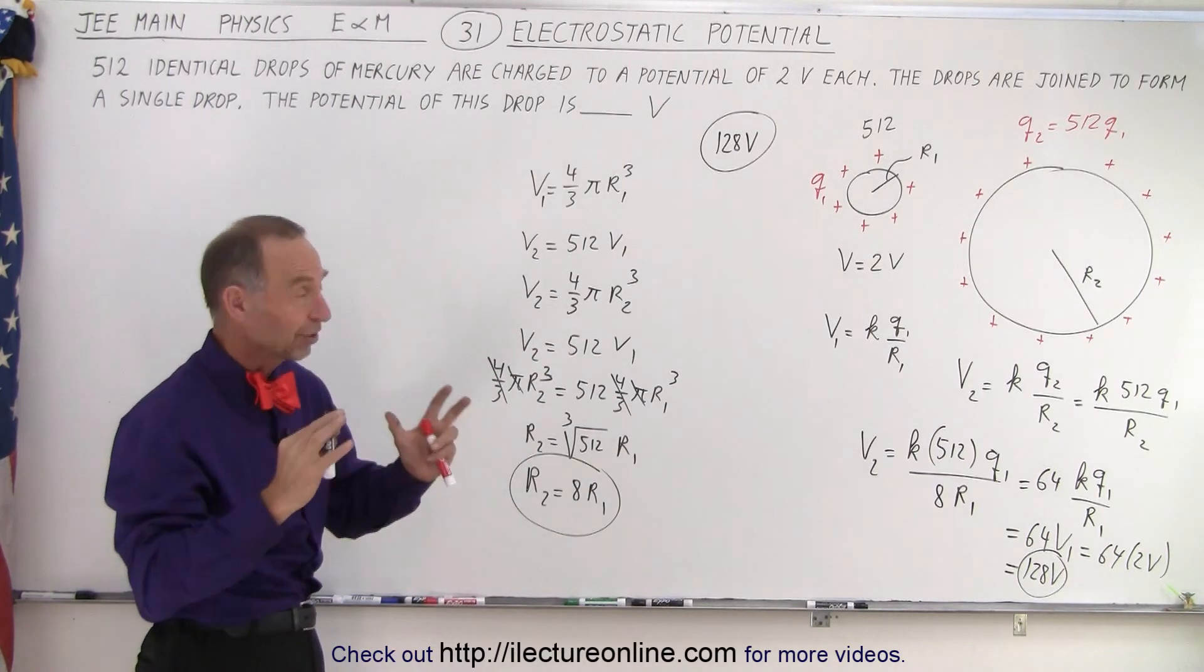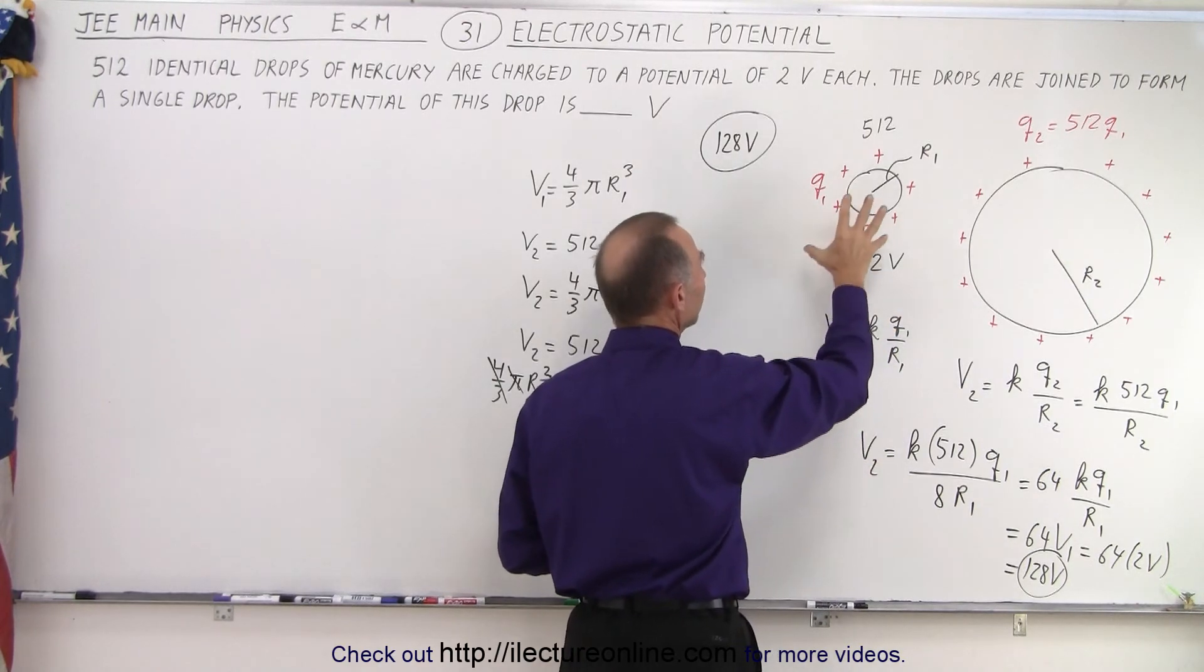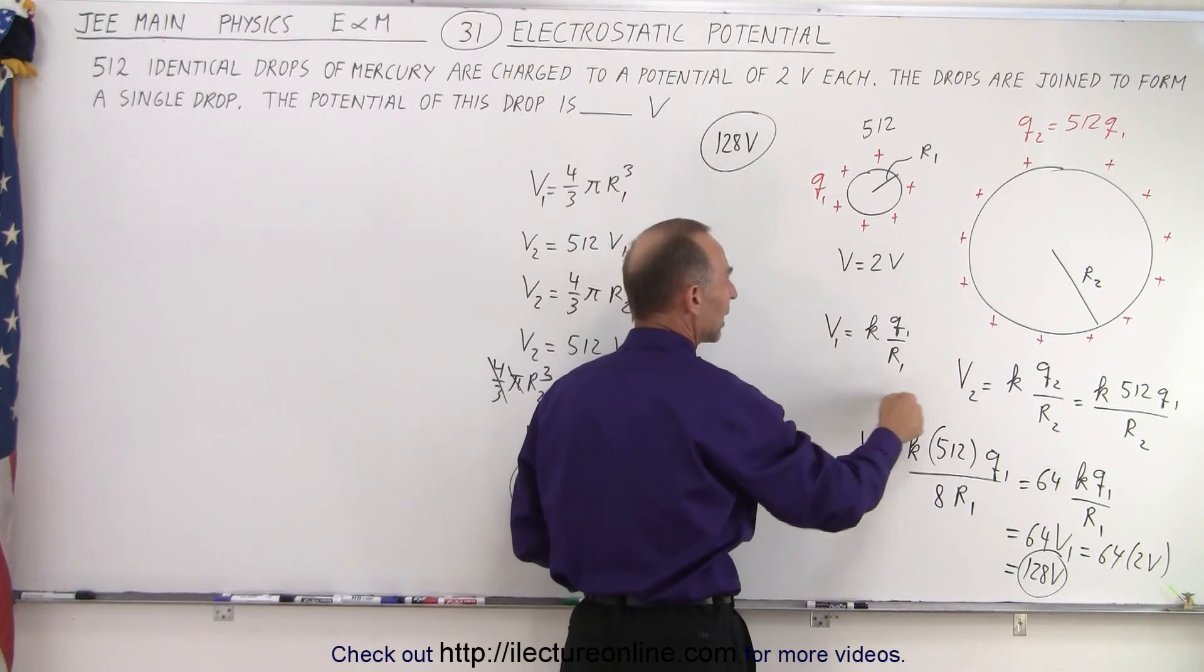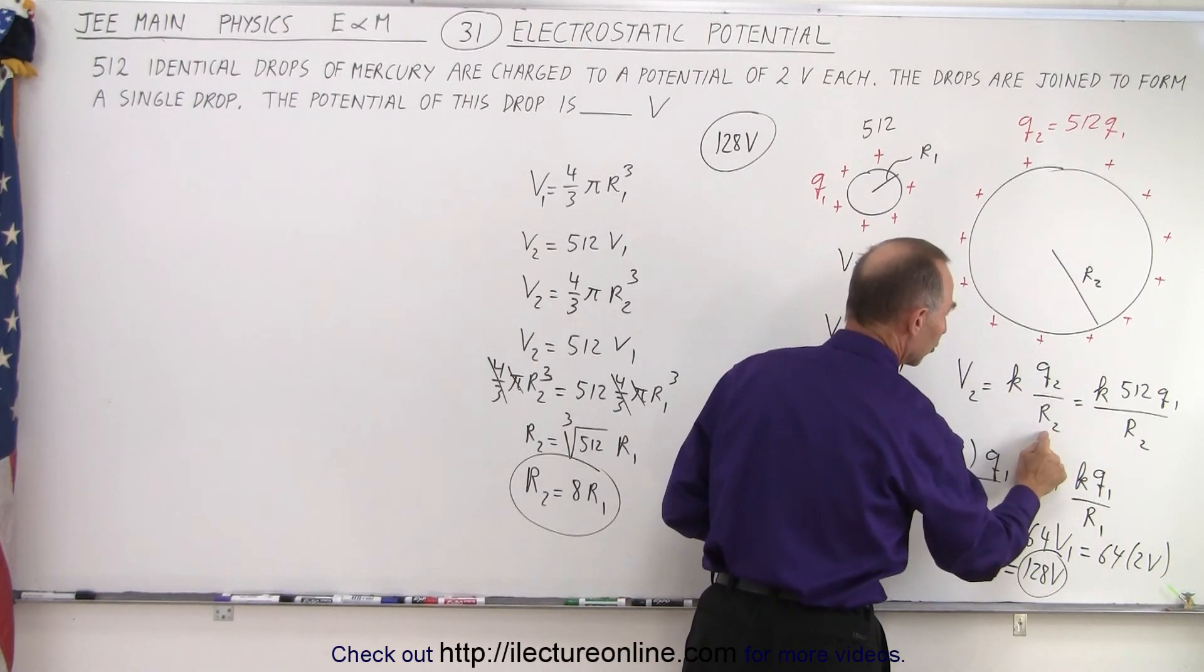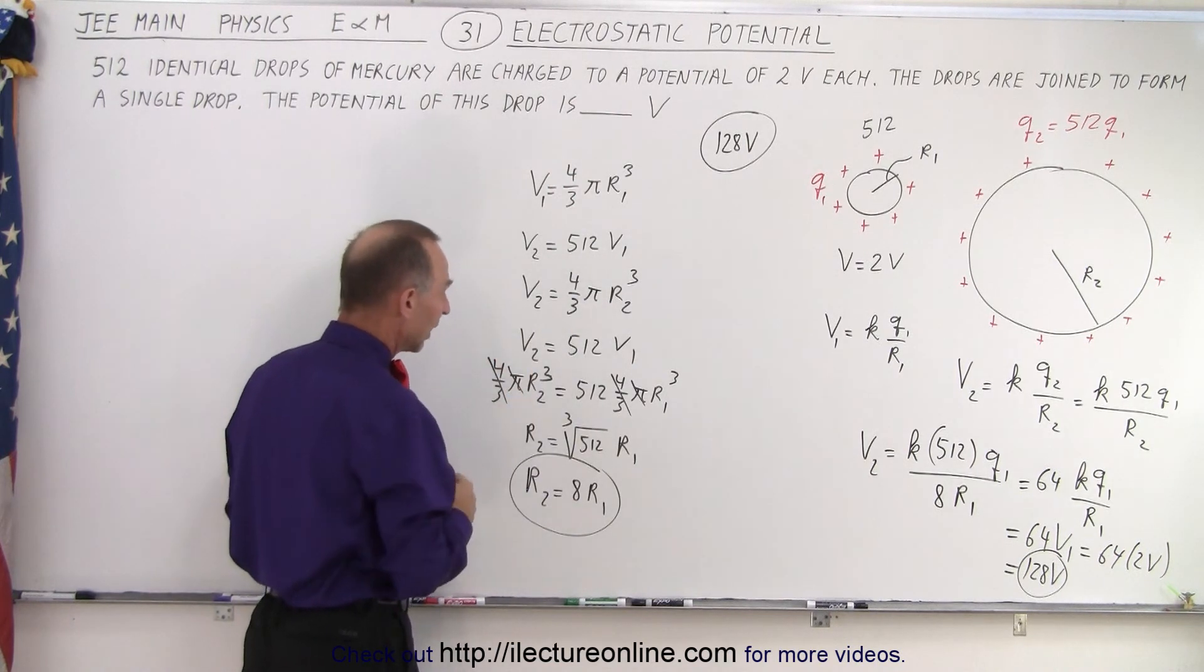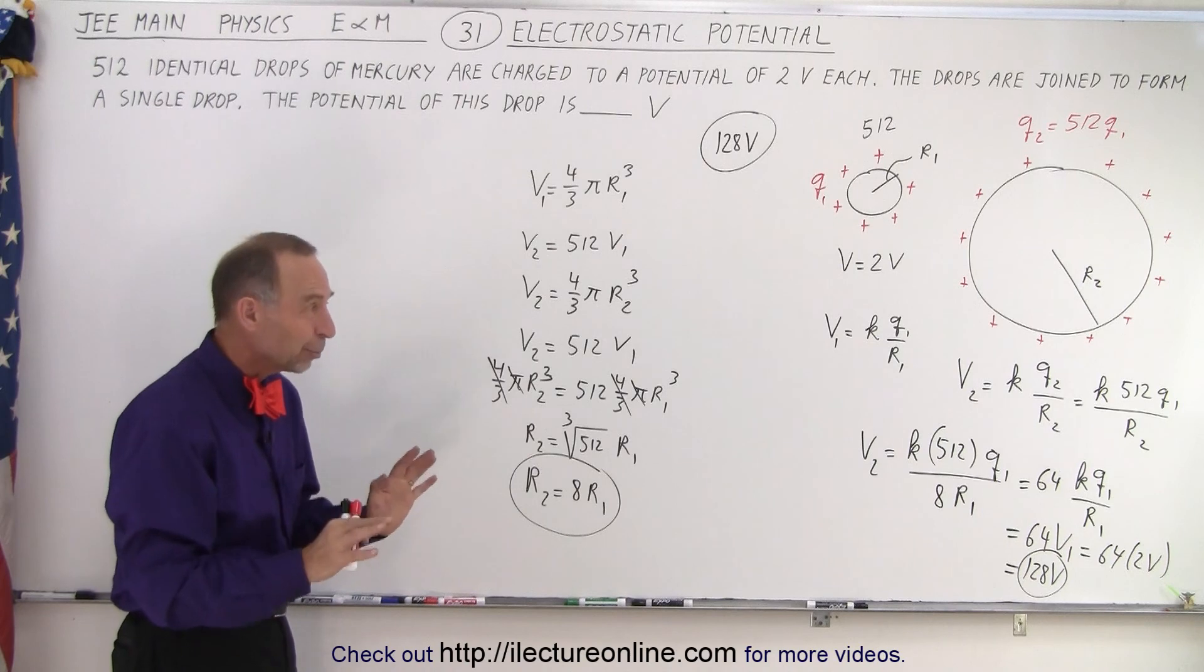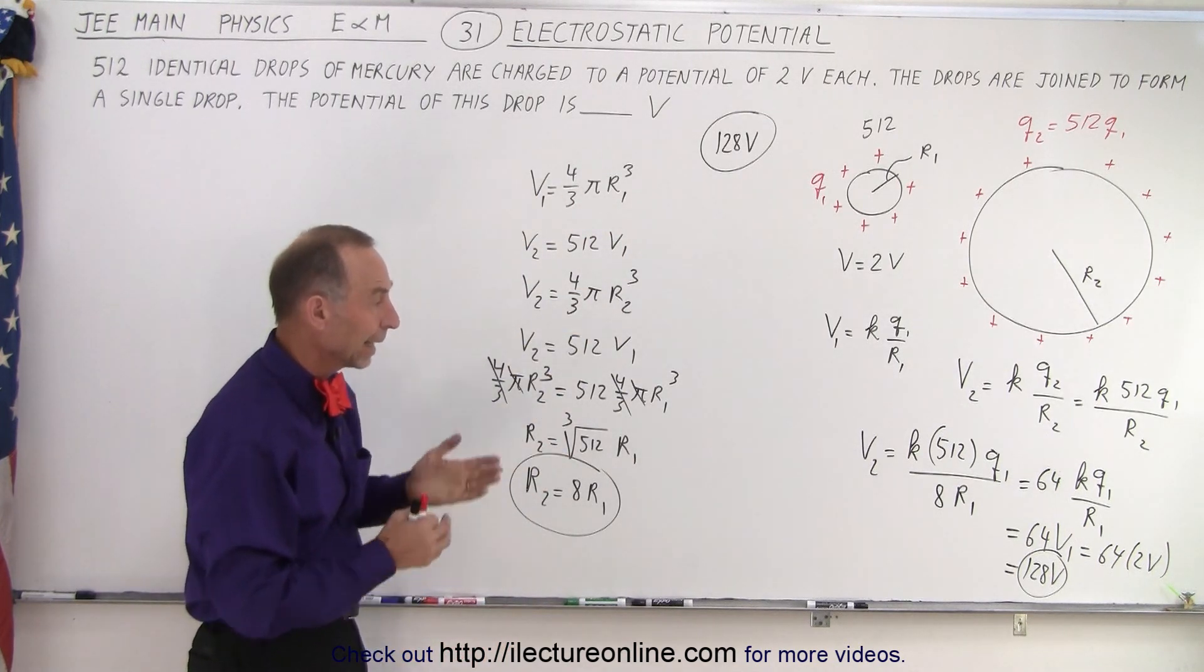Again, you have to be able to visualize what's happening. We have a small mercury sphere of radius R1, charge Q1, that has been charged to 2 volts. Then we take 512 of those and combine them into a single mercury ball, so we have 512 times the charge. We don't know what the new radius is, and we're trying to find the new voltage. We know that the voltage can be defined by KQ over R. And so that's KQ2 over R2, and Q2 is 512 times Q1. We just have to find the relationship between R2 and R1. We do that by realizing that the volume is 4 thirds pi R cubed, and then we set the two volumes equal to each other. V2 is 512 times V1, and from that we get the ratio of R2 to R1. We then plug that in, and we crank out to 128 volts. So it's simple enough once you realize that you can use this equation to find the potential, and then to realize that this is how you find the relationship between the two radii. And that is how it's done.